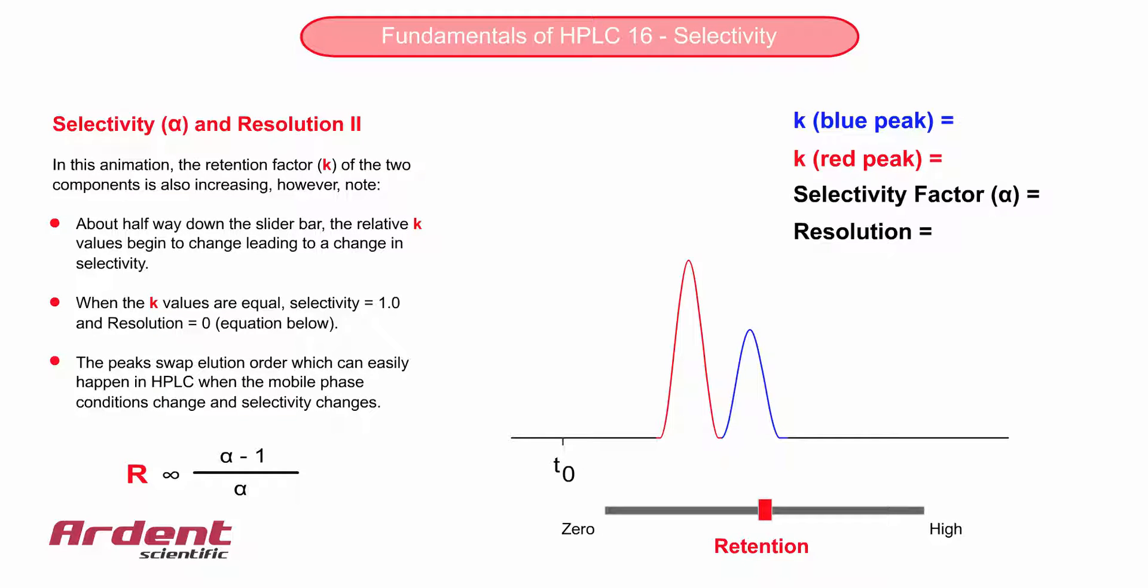This chromatogram is more interesting again, because as you move the slider bar back and forth, the peaks change elution order. This can easily happen in HPLC with a selectivity change.